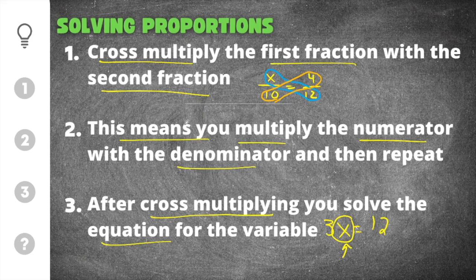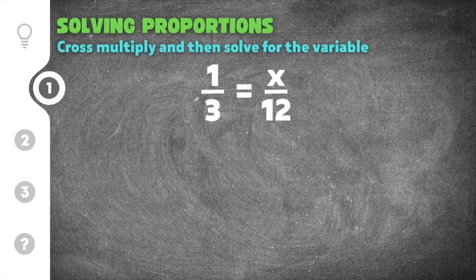Let's get started on our first practice problem on solving proportions. This problem gives us one third is equal to x over 12. The first step for solving proportions is to cross multiply, and then after you cross multiply you will solve for x. Cross multiplication means you take the numerator of the first ratio and multiply it times the denominator of the second ratio.